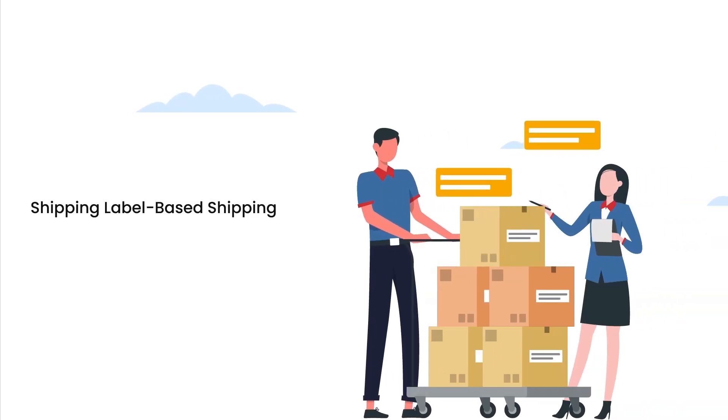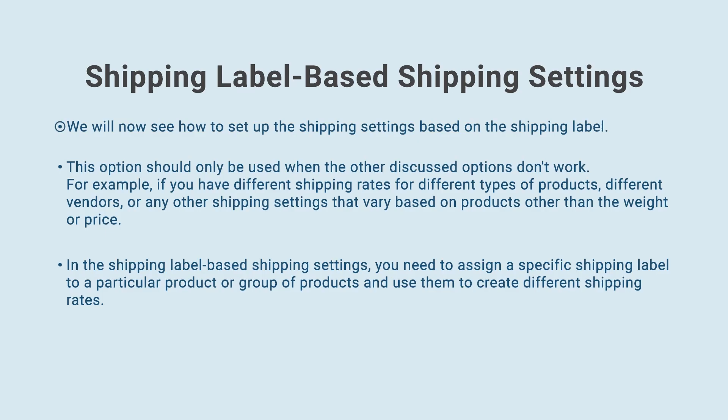Shipping label based shipping settings. We will now see how to set up the shipping settings based on the shipping label. This option should only be used when the other discussed options don't work. For example, if you have different shipping rates for different types of products, different vendors, or any other shipping settings that vary based on products other than the weight or price. In the shipping label based shipping settings, you need to assign a specific shipping label to a particular product or group of products and use them to create different shipping rates.